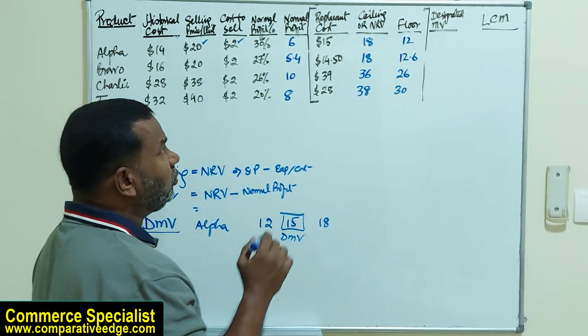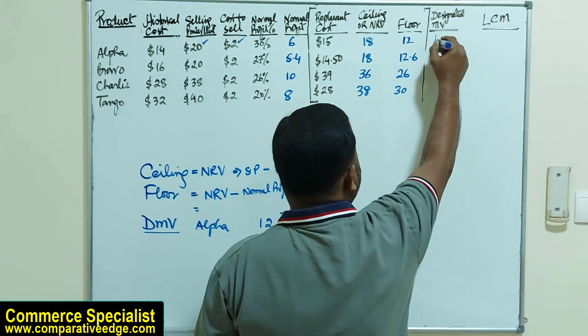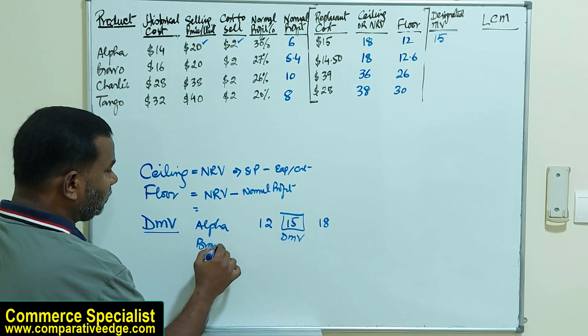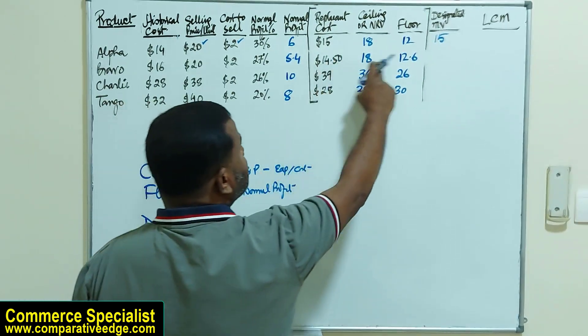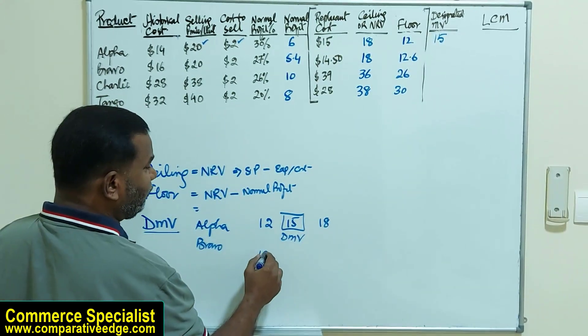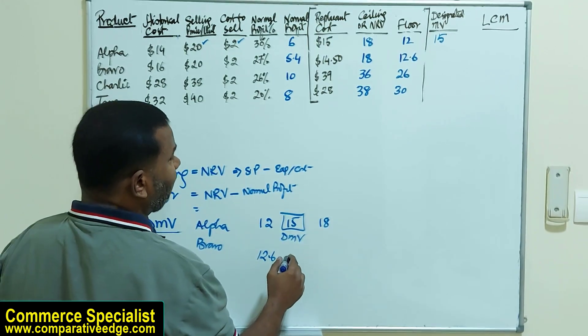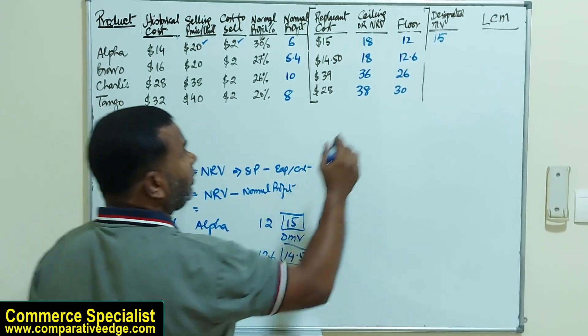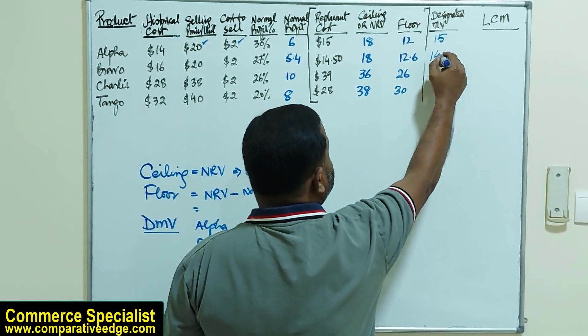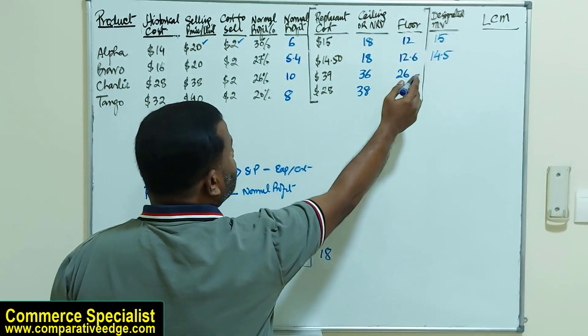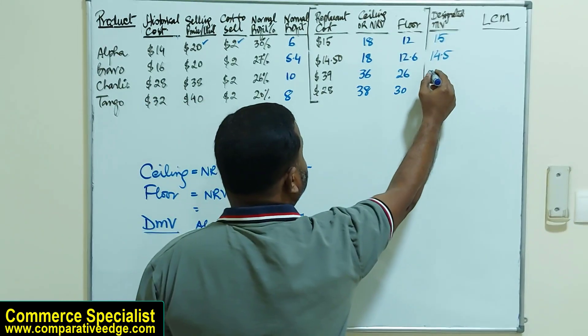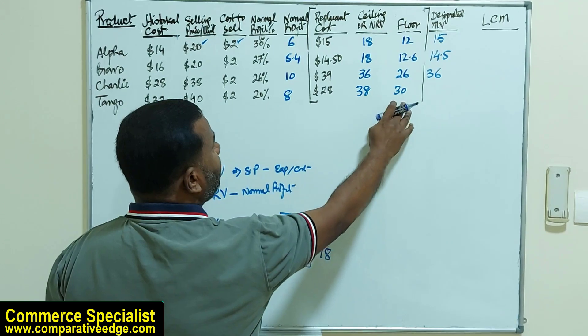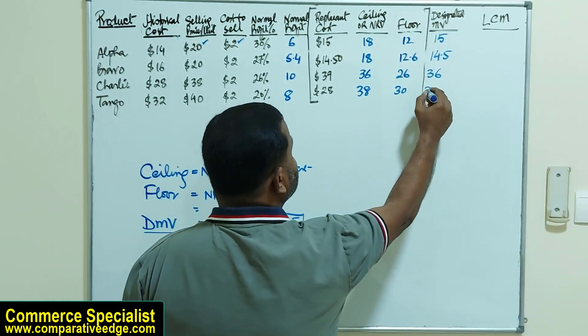Likewise, if I pick Bravo: $12.60, $14.50, and $18, so the middle value is $14.50. This would be my designated market value. If I arrange these three for Charlie, the middle value will be $36. And if I arrange these for Tango, the middle value will be $30, so my designated market value is $30.